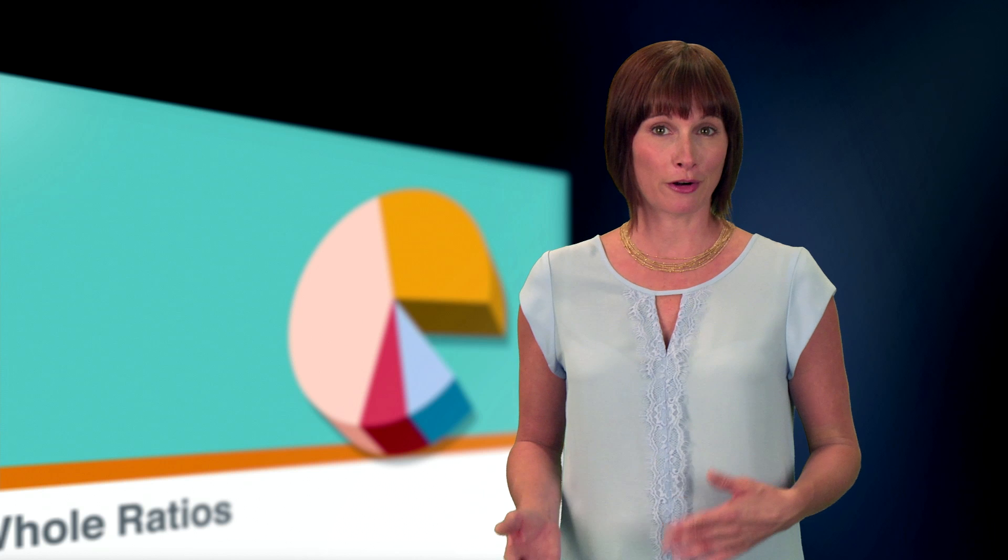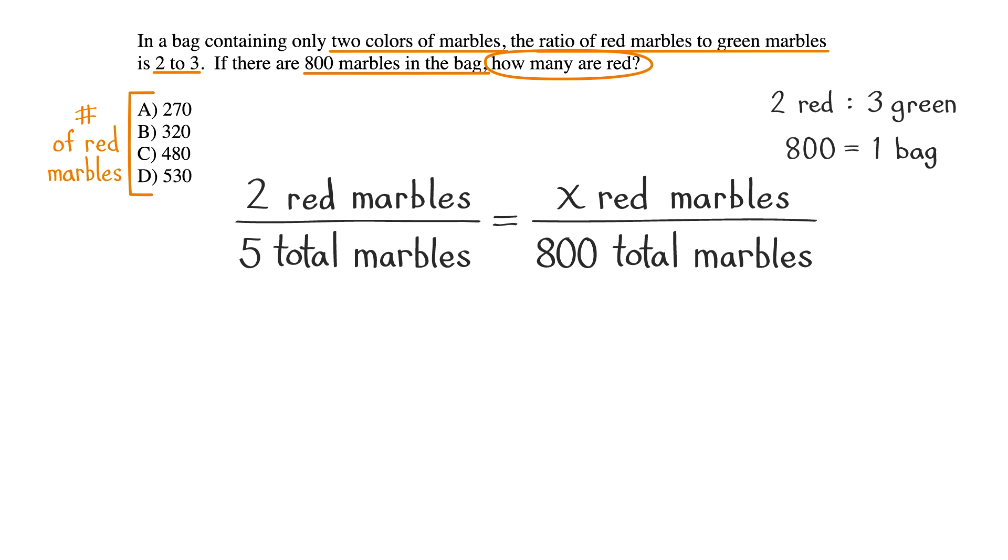That means that in our equation, we have five total marbles in the denominator of the fraction on the left. So, our equation becomes 2 red marbles over 5 total marbles equals x red marbles over 800 total marbles. Let's cross multiply.